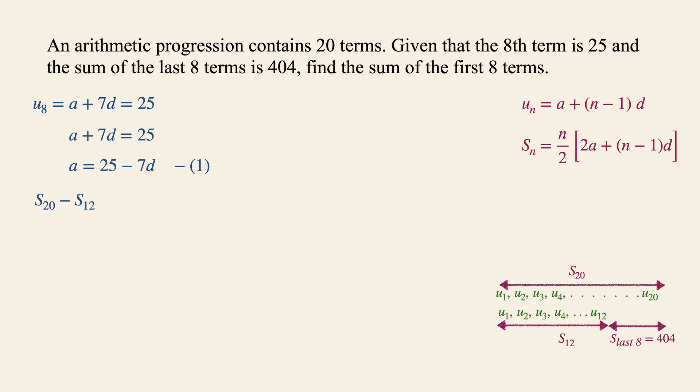The sum of 20 minus the sum of 12 terms, the first 12 terms rather, is equals to 404. Now let's bring up the formula of the sum of the first N terms which is N over 2 2A plus N minus 1 D. All we need to do is to substitute 20 and 12 into the expression over here which is 20 over 2 2A plus 19D minus 12 over 2 2A plus 11D is equals to 404.